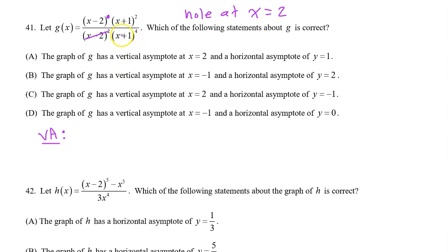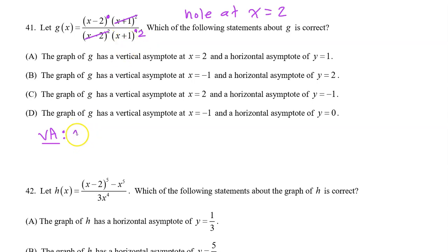So it must be the x plus 1 that gives us the vertical asymptote. We have four factors of x plus 1 in the denominator and only two factors in the numerator. That means after all the cancelling is done, there will be leftover factors in the denominator — so this will give us a vertical asymptote. The two factors in the numerator will cancel out two of the factors in the denominator, leaving 2. Since there are remaining factors in the denominator, this gives us a vertical asymptote at x equals negative 1.